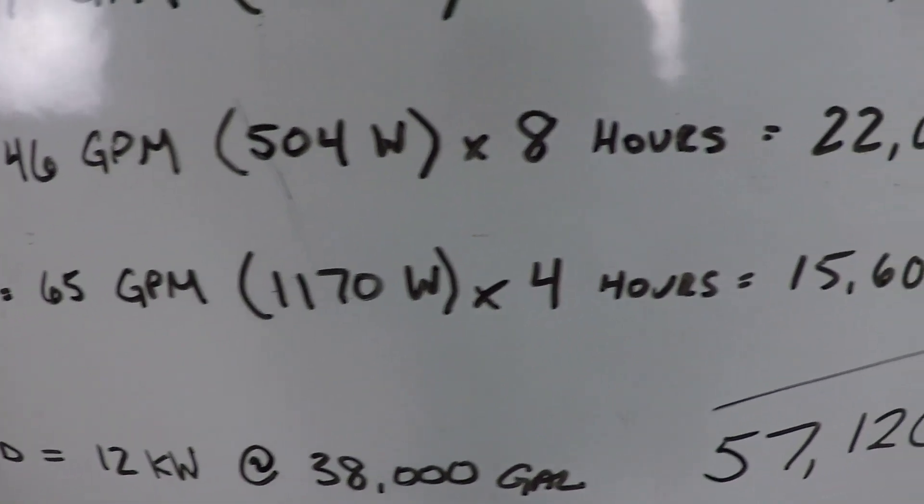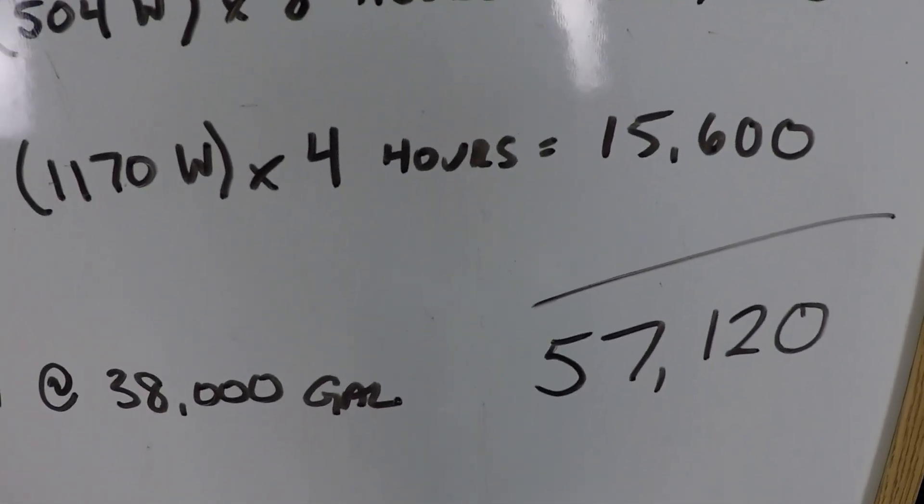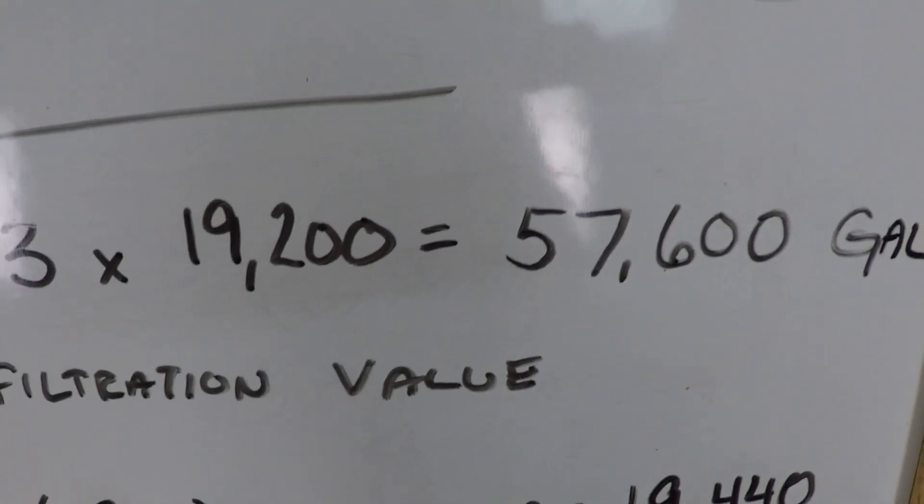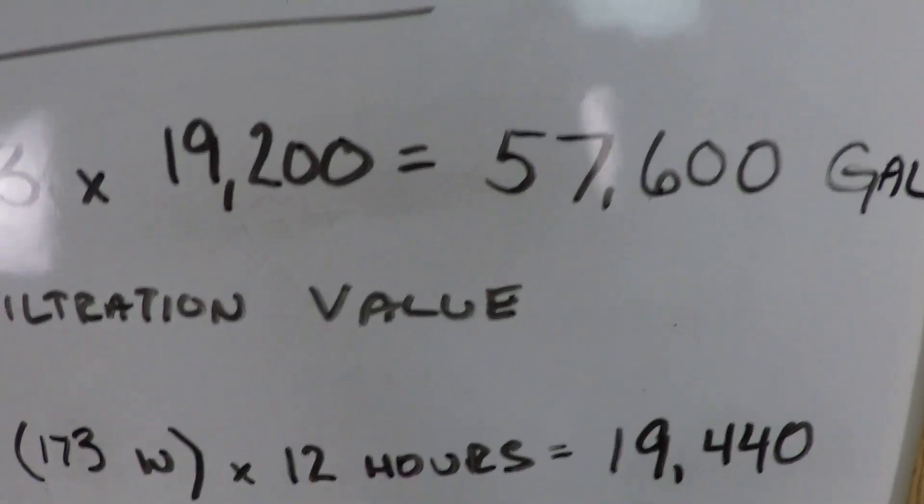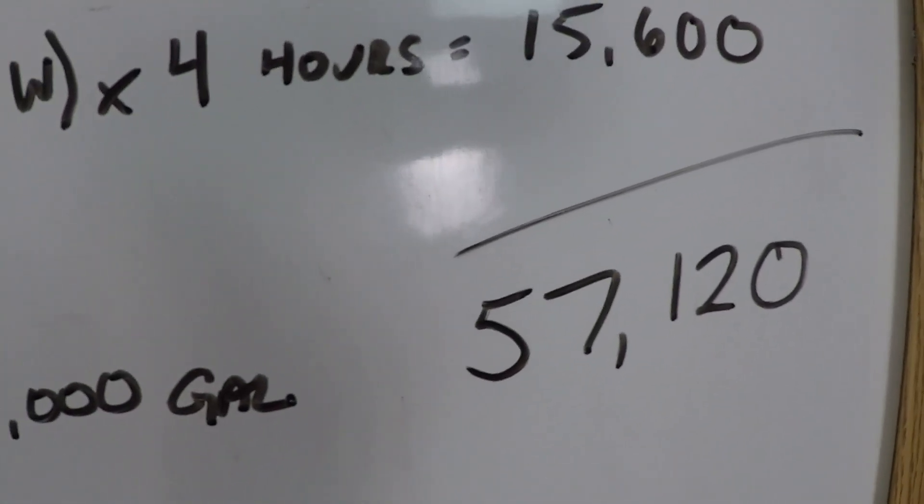So over 4 hours, we're able to get 15,600 at the highest speed, resulting in 57,120 gallons per day. We were aiming for 57,600, but it's hard to get the number bang on. I consider that to be mission accomplished, 57,120.